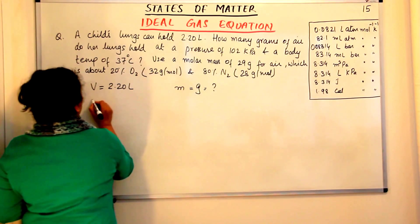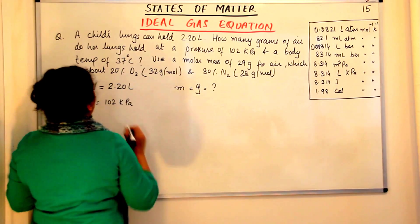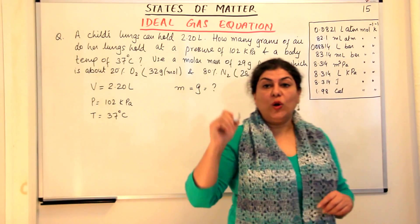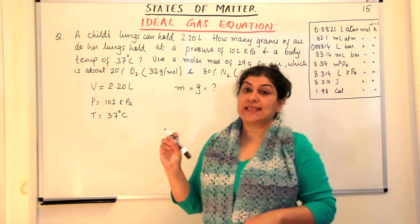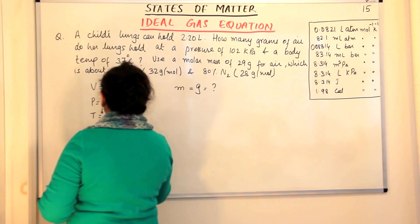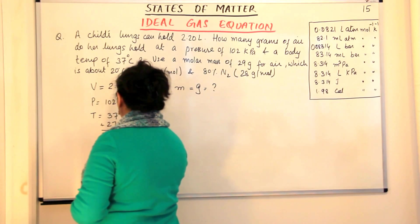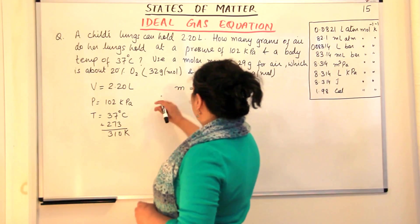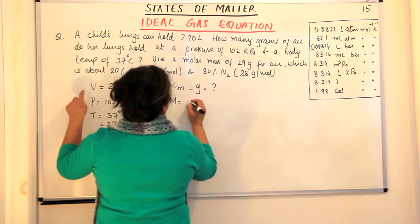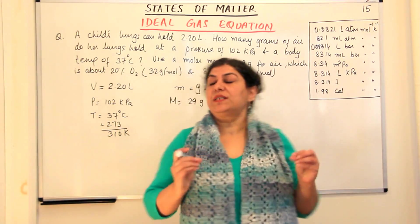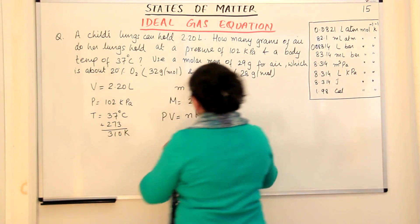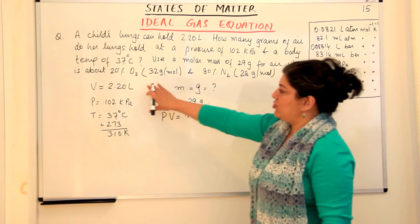The pressure given is 102 kilopascals and the temperature given is 37 degrees Celsius. Remember that for all gas laws the temperature should never be in degrees Celsius — it should be in Kelvin. So we add 273: 37 + 273 = 310 Kelvin. The molar mass of air is 29 grams per mole. The ideal gas equation is PV = nRT. We have not been given n directly, but we have been asked for grams and the molar mass is given.